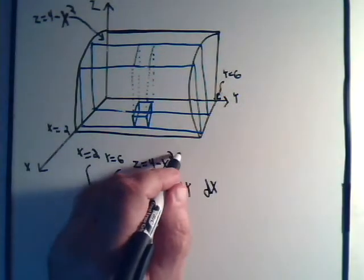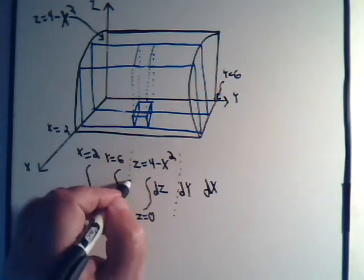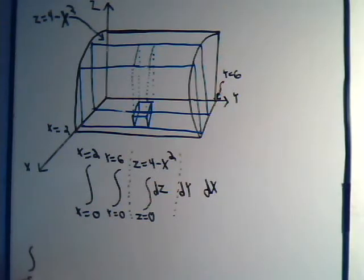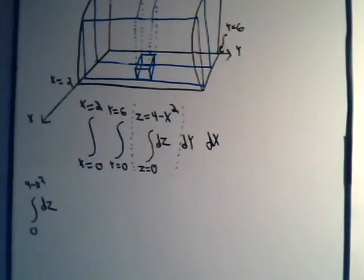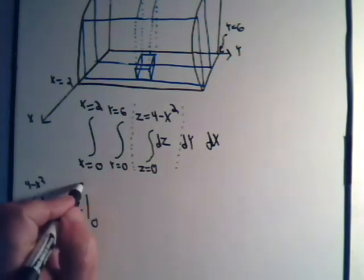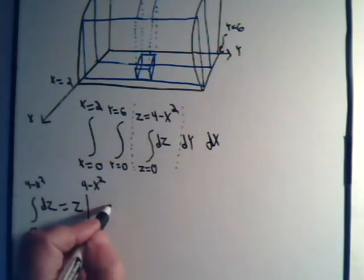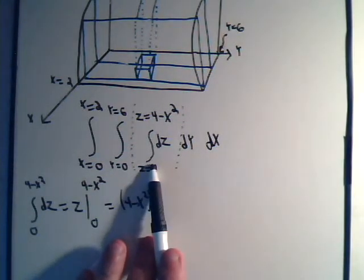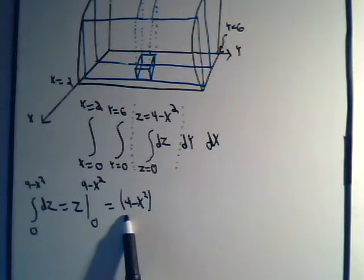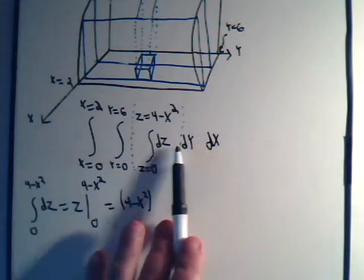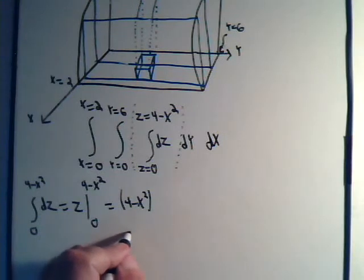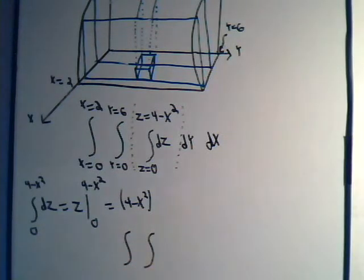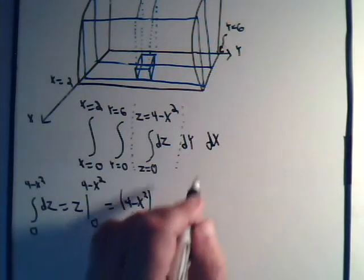To evaluate the triple integral, we start with the innermost integral. We integrate dz from 0 to 4 minus x squared. The integral of dz is just z, evaluated from 0 to 4 minus x squared, which simply equals 4 minus x squared when we apply the limits. We can now replace the inner integral with this expression, reducing the triple integral to a double integral.